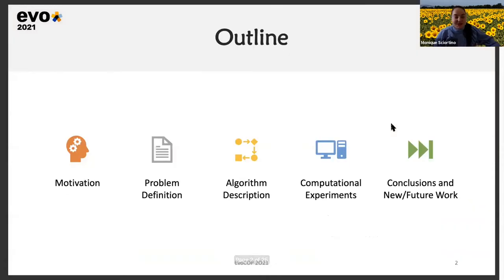The outline of this presentation involves, first of all, the motivation as to why we have decided to focus on the school bus routing problem. Then we'll move on to the problem definition, the algorithm description, some computational experiments that we have performed, and then I will end with some concluding remarks and future work.